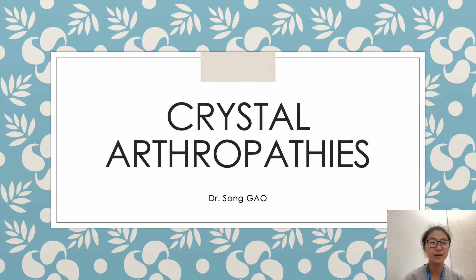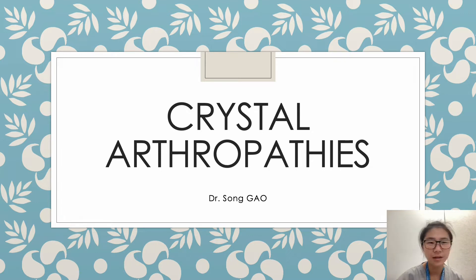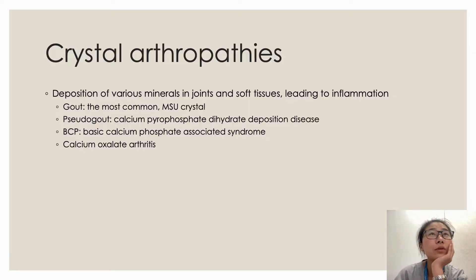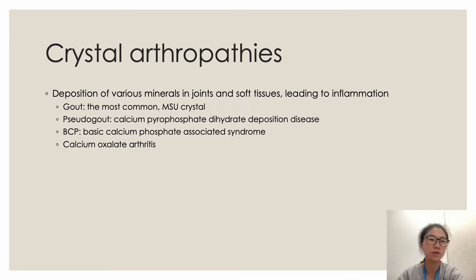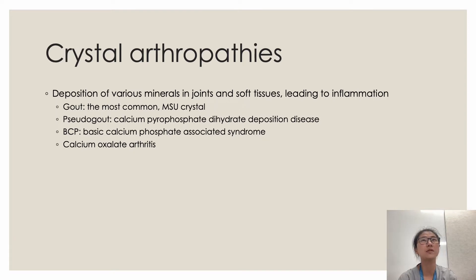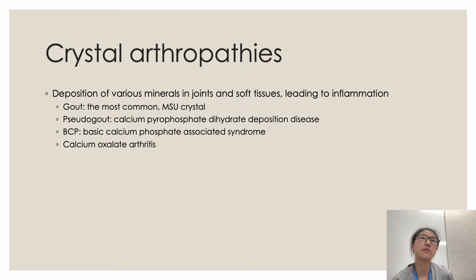My name is Song and I'm presenting on crystal arthropathies today. Crystal arthropathies are caused by the deposition of various minerals in the joints and soft tissue, which leads to inflammation of the joints. The most common types are gout, pseudogout, BCP, and calcium oxalate arthritis. I'll focus on the top two: gout, which involves monosodium urate crystal accumulation, and pseudogout, which is calcium pyrophosphate dihydrate deposition disease.